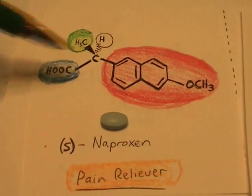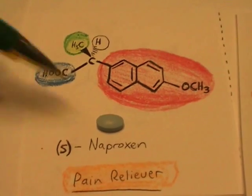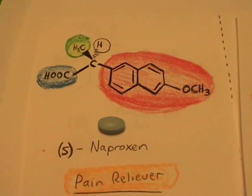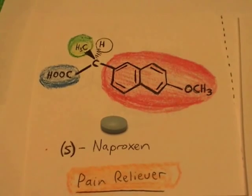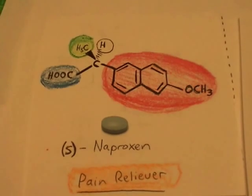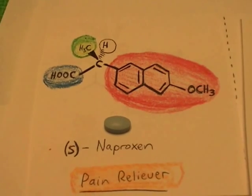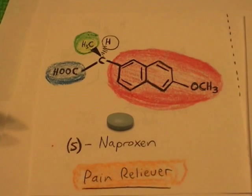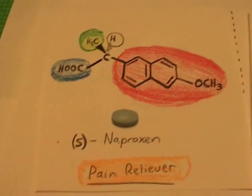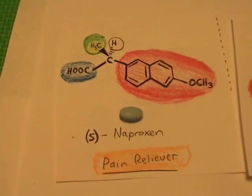If you have this orientation of those four different groups, then you've got S-naproxen. If I were to switch two of those groups — any two of those, just pick two and switch them — now you've got R-naproxen. R-naproxen is a liver toxin, and that's the mirror image of S-naproxen. Let me show this to you with a better visual.